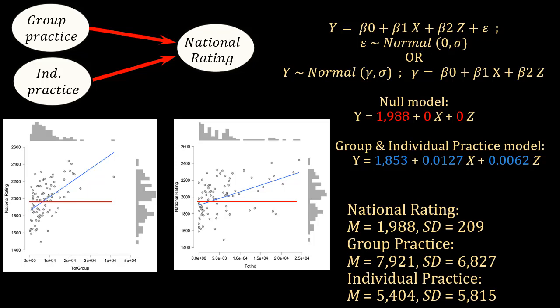So in this case, we are going to compare with a model that says that beta 1 and beta 2 is 0. So this model doesn't change. It will be the same as before in simple regression. It would be the mean. We put a line in the mean, and this is our prediction for all the values of national rating. But this will change. So again, we've got an intercept at 1,853. And then now group practice beta 1 is 0.0127, and the individual practice beta 2 is 0.0062.